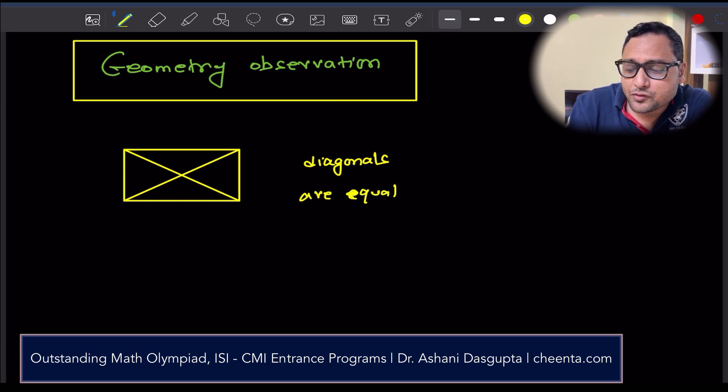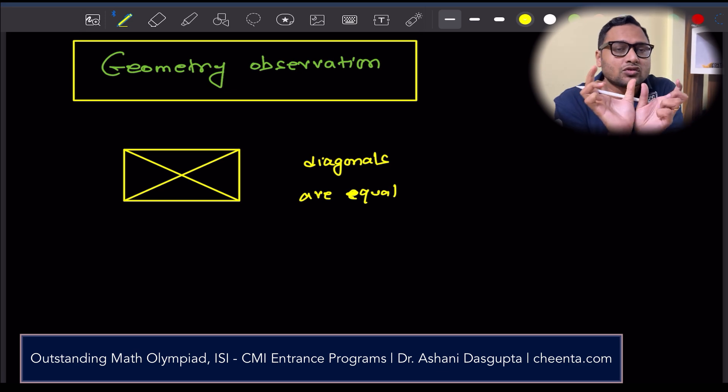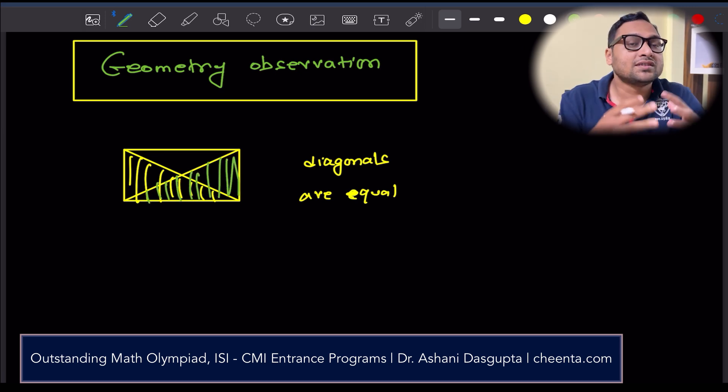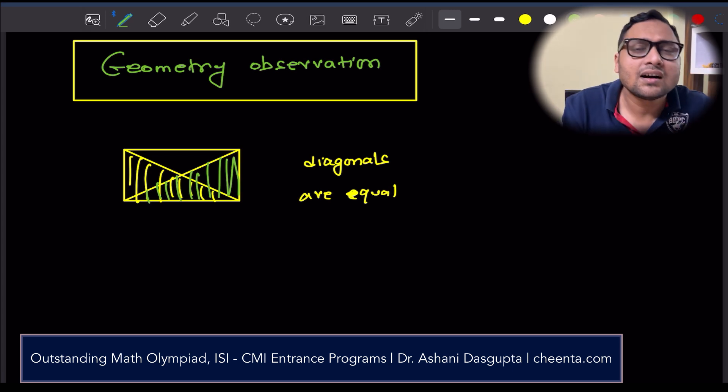I think you can easily prove it by showing the two triangles, maybe this yellow one and this green one. If you can show these two triangles congruent, then the two sides will be equal and so on. You can put the proof of the fact that two diagonals of a rectangle are equal in the comment section.